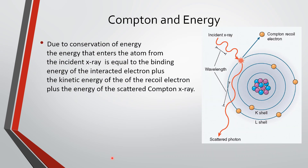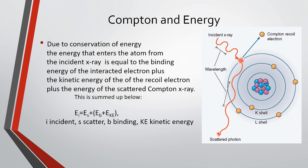Due to the conservation of energy, the energy that enters the atom from the incident x-ray equals the binding energy of the interacting electron, plus the kinetic energy of the recoil (Compton) electron, plus the energy of the scattered x-ray. So however much energy is put in, a certain amount goes to ejecting the electron, and the remainder is carried off as the scattered photon.